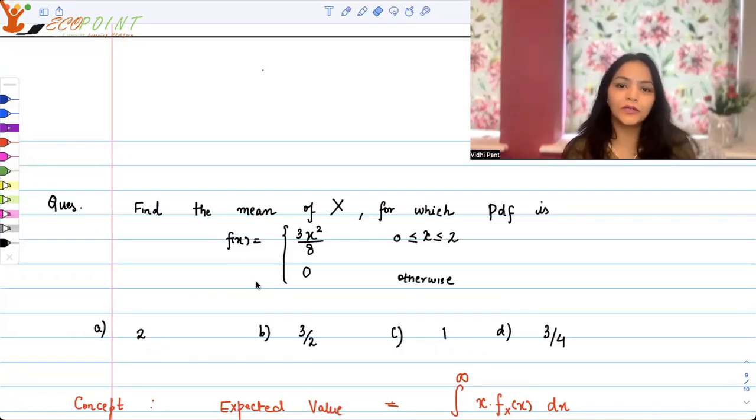Hi guys, in this video I'm going to discuss a couple of questions. In the previous video there was a problem with the question that I had formed. I had taken the pdf to be 3/2 x² where x is between 0 to 2, and one of the students pointed out that this doesn't seem to be the correct pdf. So I have rectified my question.